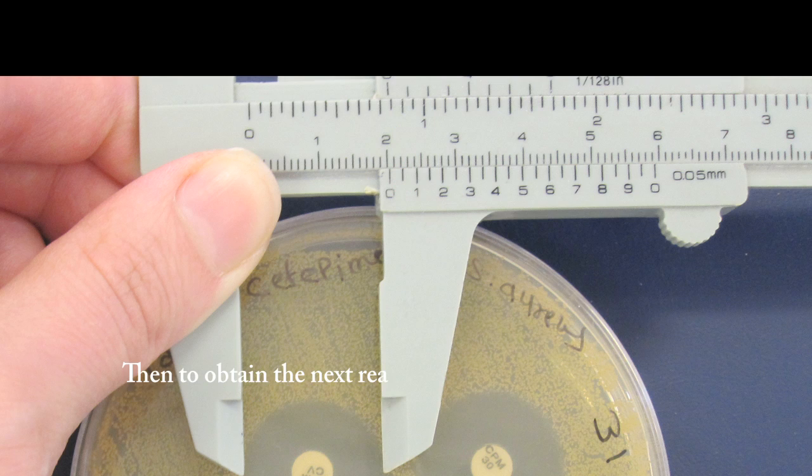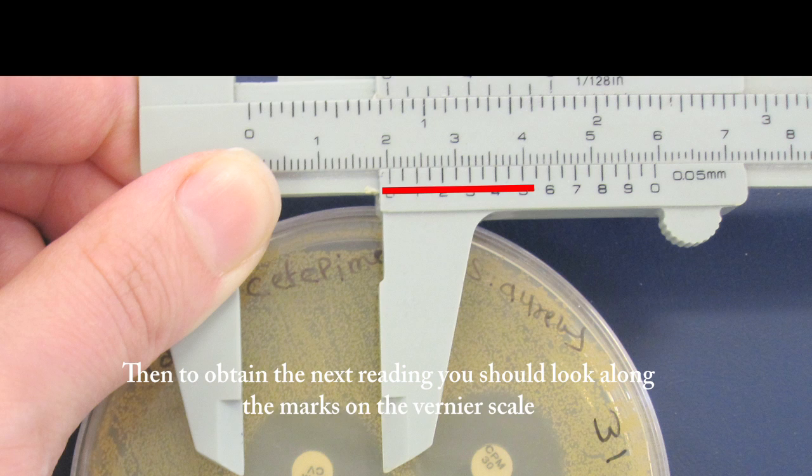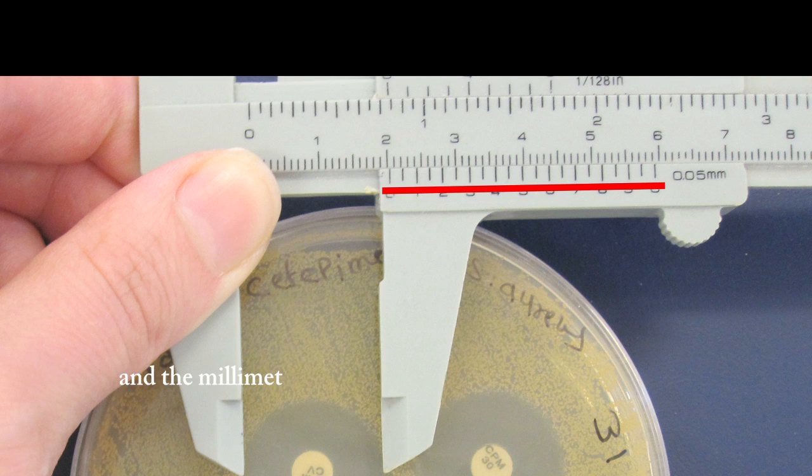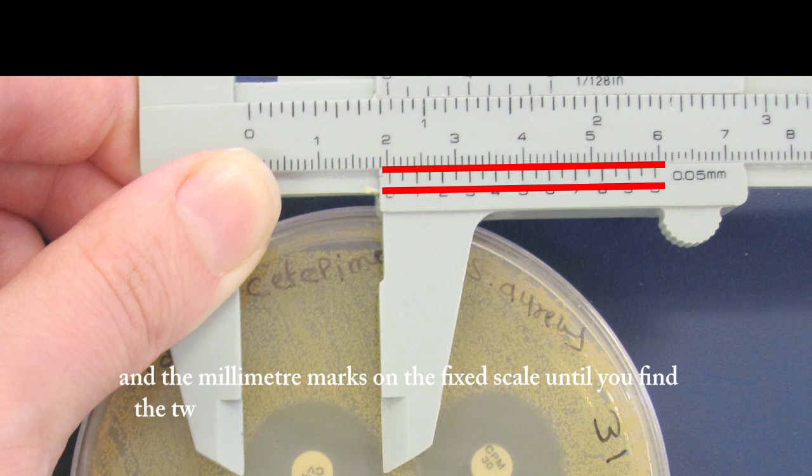Then, to obtain the next reading, you should look along the marks on the vernier scale and the millimetre marks on the fixed scale, until you find the two marks that most closely align as a straight line.